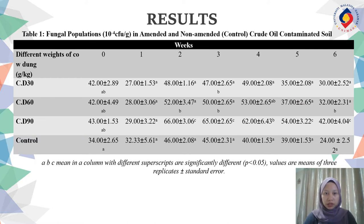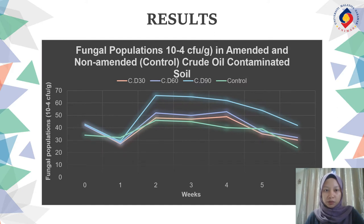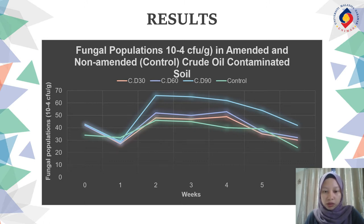This is the result of fungal population in amended and unamended crude oil contaminated soil. The mean count of fungal population decreased in all treatment options from week 0 to week 1, and then increased at week 2. From week 2 to week 4, the mean count slightly decreased but increased at week 3 to week 4 for treatments of cow dung 30 and 60 grams. The application of all treatments shows a decrease at week 5 and week 6, and the increments observed in mean count of fungal population were significant in most cases.